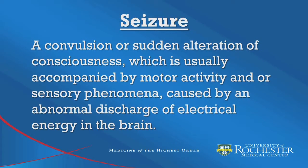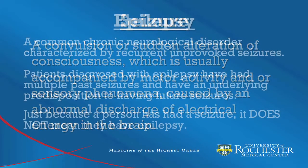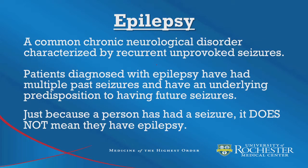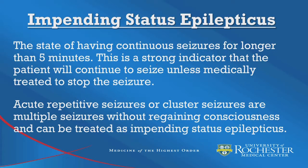To review: a seizure is defined as a convulsion or sudden alteration of consciousness, usually accompanied by motor activity and/or sensory phenomena caused by an abnormal discharge of electrical energy in the brain. Epilepsy is a common chronic neurologic disorder characterized by recurrent, unprovoked seizures — just because a person has a seizure does not mean they have epilepsy. Impending status epilepticus is continuous seizures for longer than five minutes, a strong indicator the patient will continue to seize unless medically treated. Acute repetitive or cluster seizures are multiple seizures without regaining consciousness and can be treated as impending status epilepticus.